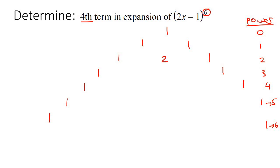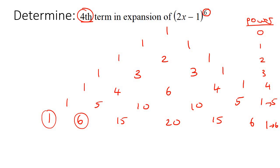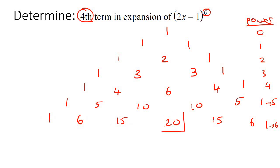Now let's fill everything in. So that's 2; 1 plus 2 is 3; 2 plus 1 is 3; 1 plus 3 is 4; 3 plus 2 is 6; 3 plus 1 is 4; then 5, 10, 10, 5; and then 6, 15, 20, 15, and 6. So these are the numbers we are looking for. They want the fourth term, so term 1, term 2, term 3, term 4 — it's the 20 that we're looking for.